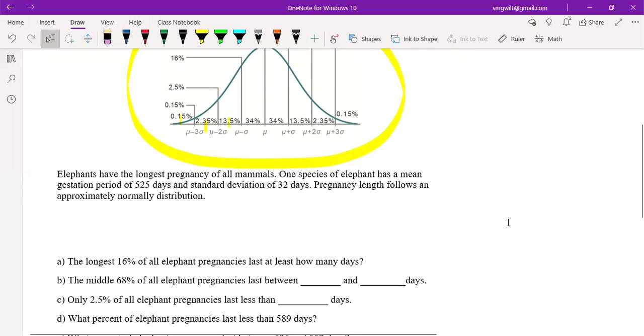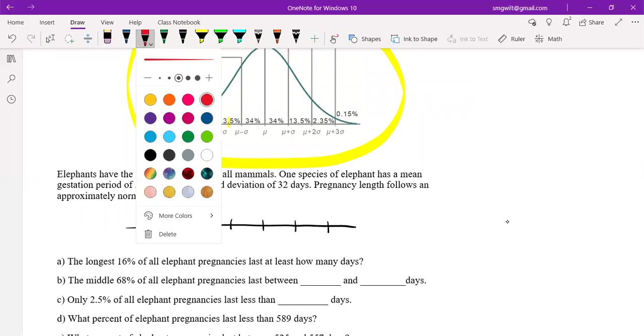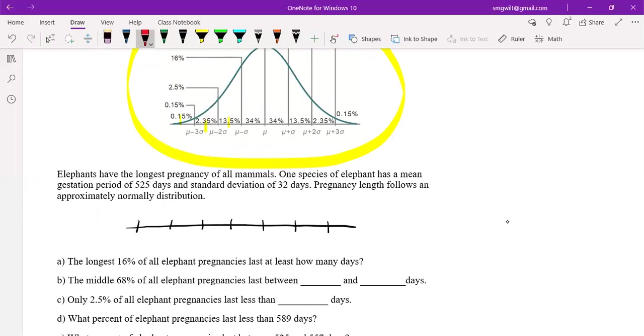One thing that I wanted to recommend is I don't ever really draw that whole curve. I just draw the number line because the curve is always the same. Just to save space, I typically will just draw that number line. If I'm just drawing the number line, I'm going to put the mean in the middle and then I'm going to go out one, two, three standard deviations to the right and one, two, three standard deviations to the left.